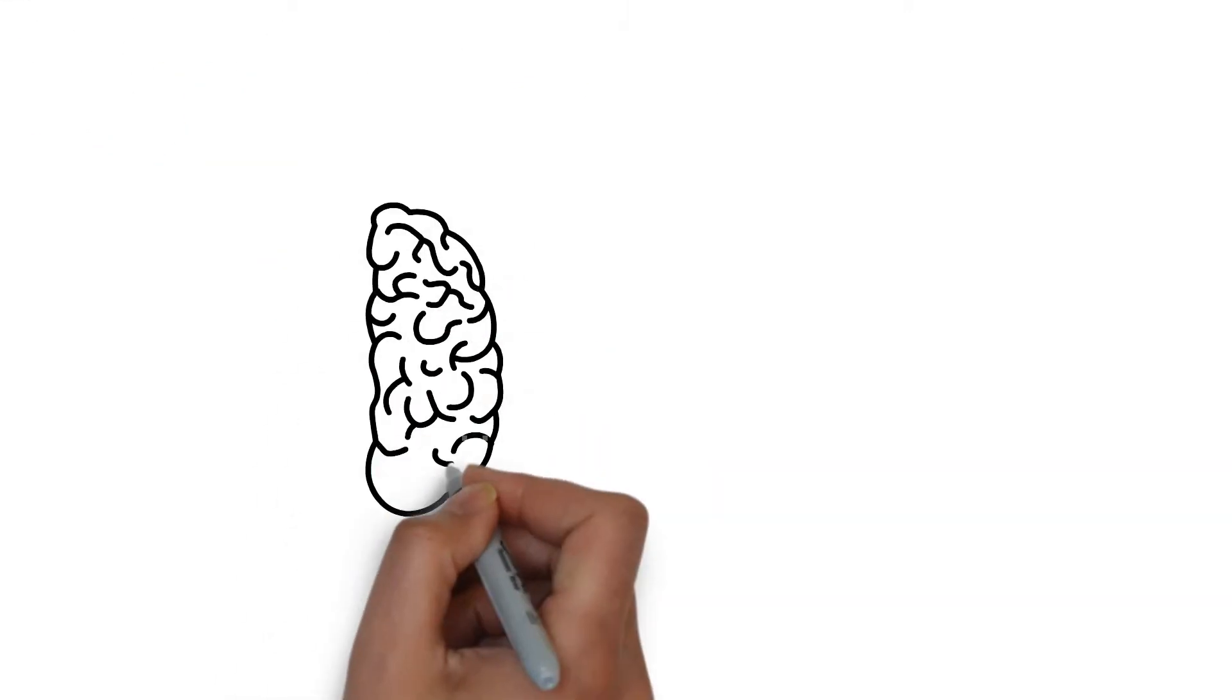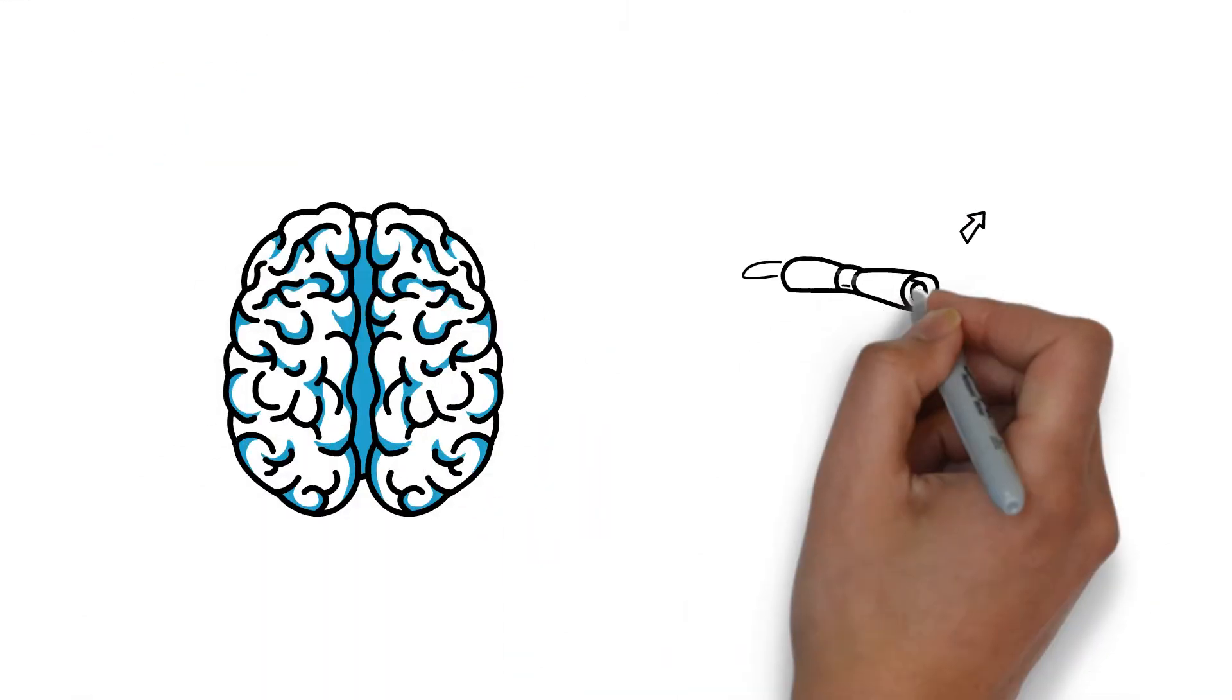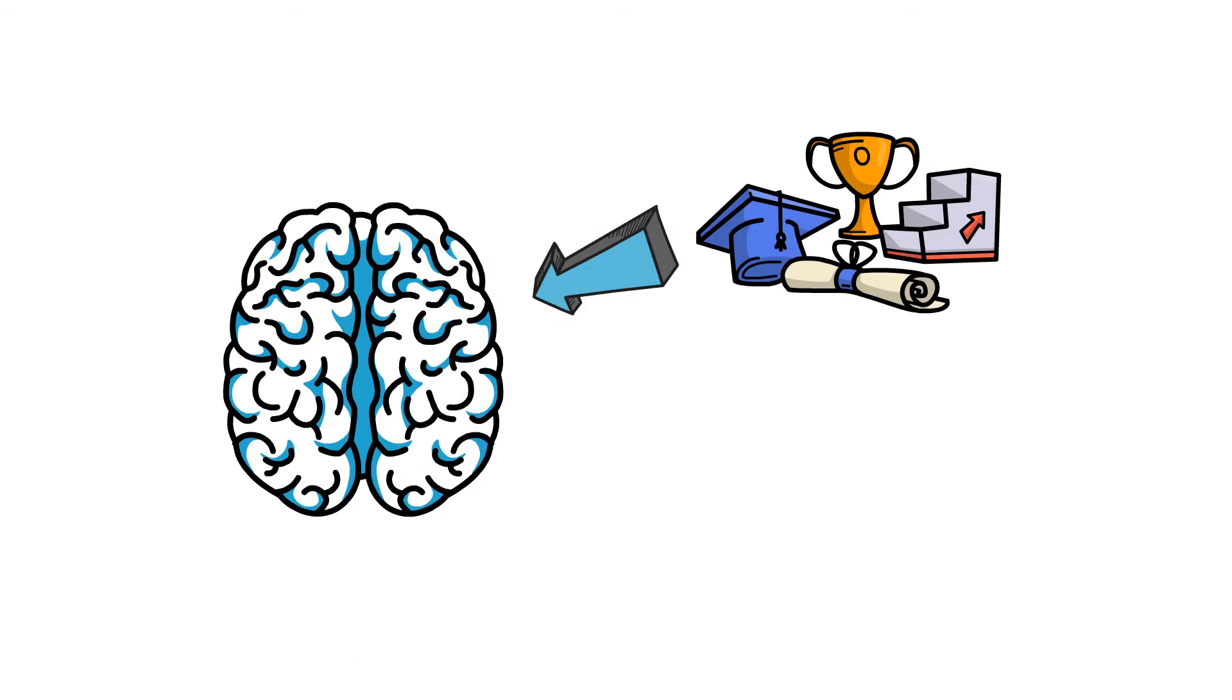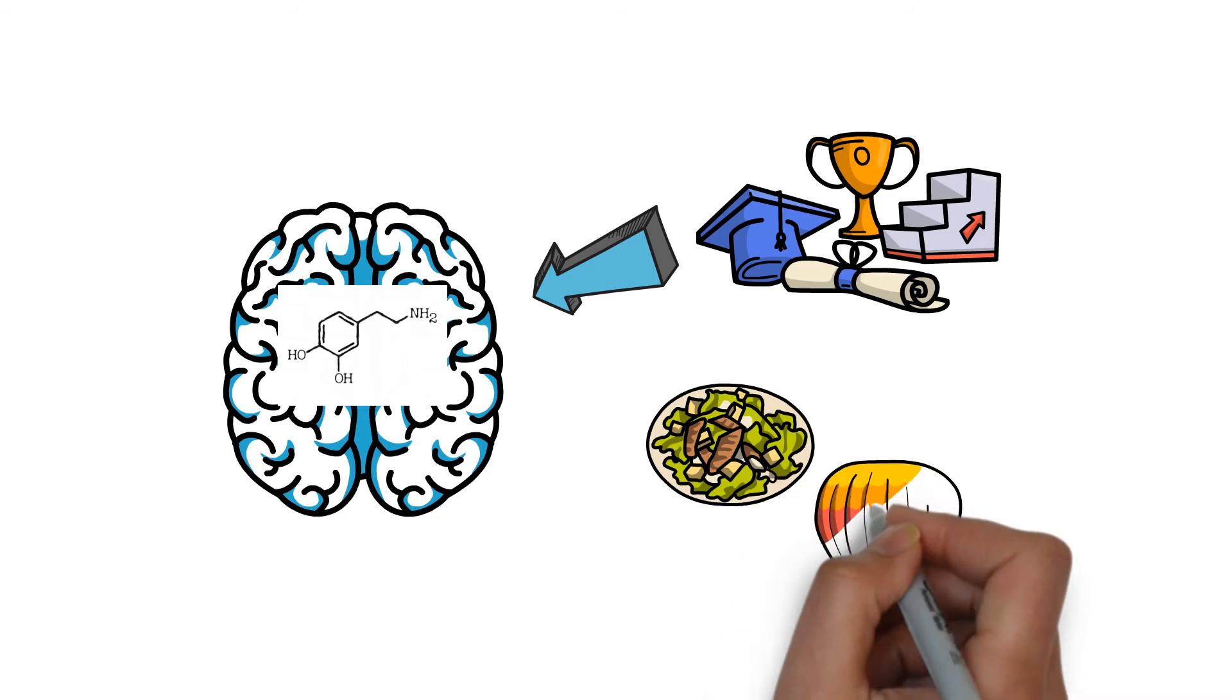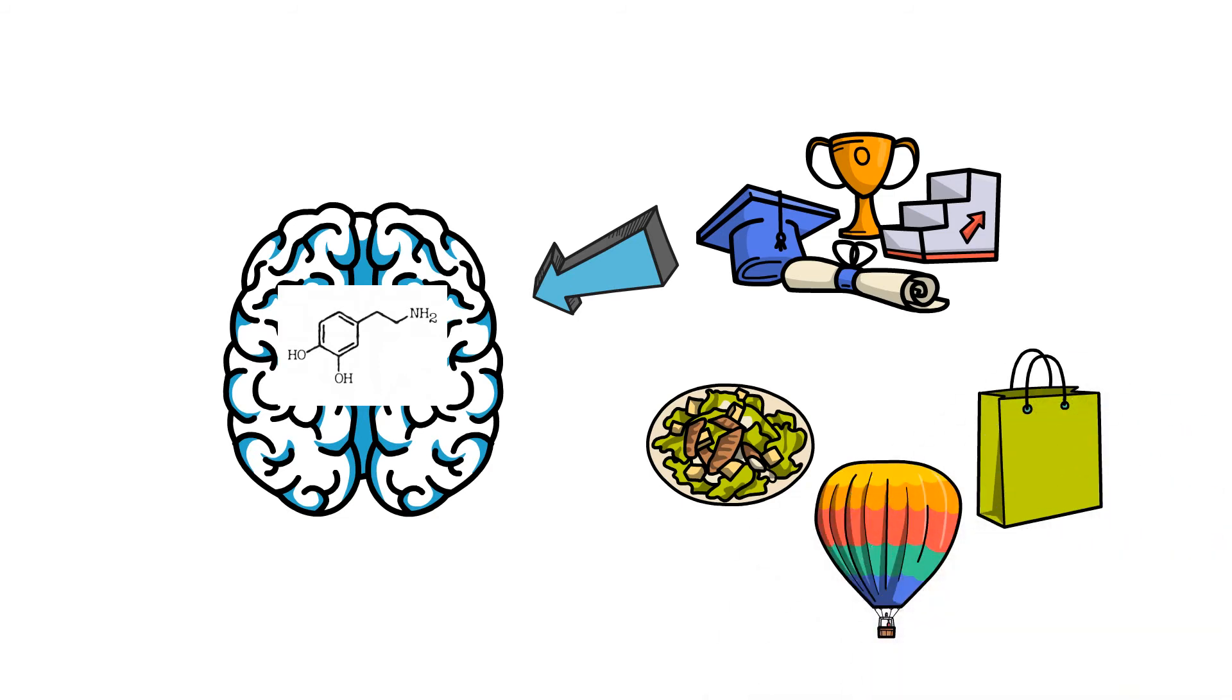Usually more dopamine will be generated when the brain is waiting for some rewards. Also, when you are expecting good things to be happening soon, such as delicious food, an exciting journey, or shopping, the dopamine level will be raised in your brain too.